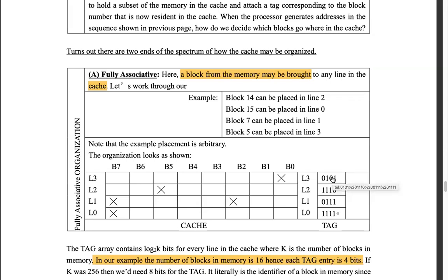The CPU checks this lookup table called a tag to know if the destination block is already mapped to the cache. It has four entries in its tag corresponding to four cache lines. Each cache line has its tag, which indicates which block is stored in that line. So if I'm looking for block 5, I compare every tag — there is a hit when I find tag 0101 at the L3 entry — that's a cache hit.